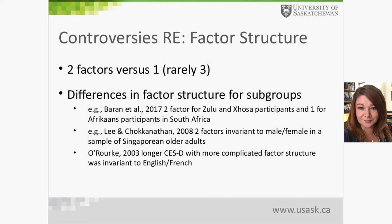Some have postulated that the separability of the two factors is really just an artifact of reverse scoring, and that these two items should be used as a data quality check. Others argue that lack of positive affect is genuinely distinct from depressed or negative affect. In the diagnostic criteria for major depressive disorder, there really are two separate potential factors: sad mood and lack of positive mood or interest — also known as anhedonia. So these factors are potentially quite separable, though that remains controversial.